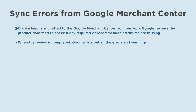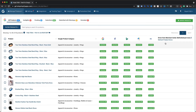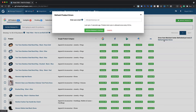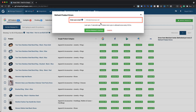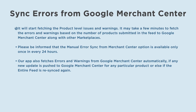Once a feed is submitted to Google Merchant Center from our app, Google reviews the product data feed to check if any required or recommended attributes are missing. When the review is completed, Google lists all errors and warnings. To sync these with our app, navigate to the Manage Products page, and under the 'Errors from Merchant Center' column, click on 'Refresh Product Errors.' A dialog box will pop up where you enter an email address to receive an error sync report, then click 'Fetch Product Status.' It will start fetching product-level issues and warnings, which may take a few minutes depending on the number of products submitted. Please note that the manual error sync option is available only once every 24 hours.